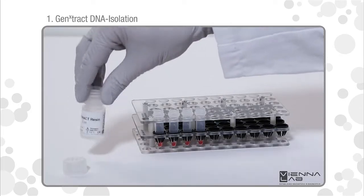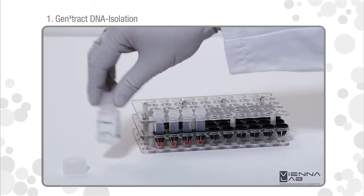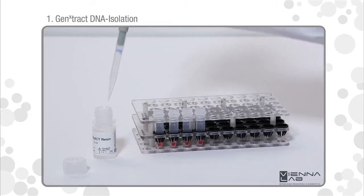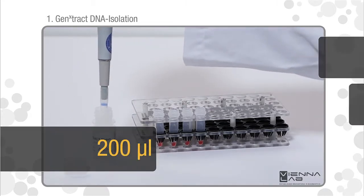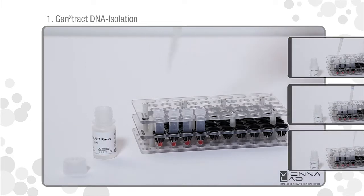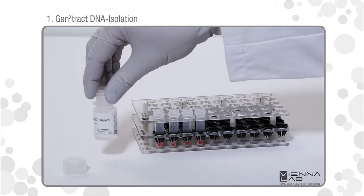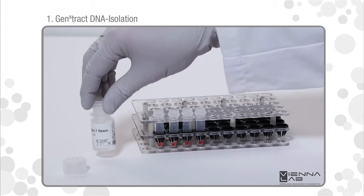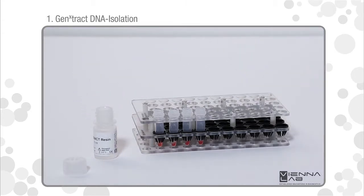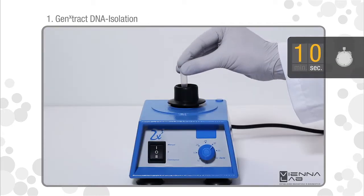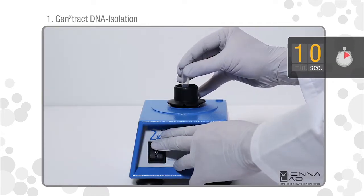Resuspend gene extract resin by swirling the bottle thoroughly. Add 200 microliters gene extract resin to the pellet. Gene extract resin sediments quickly. Repeat suspension each time immediately before removing another aliquot. Close tube and vortex for 10 seconds.